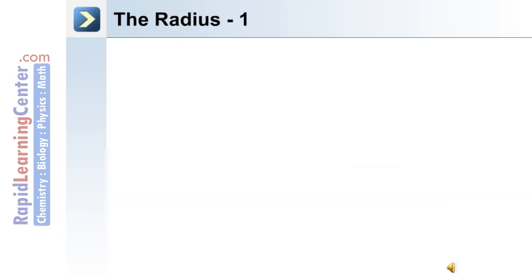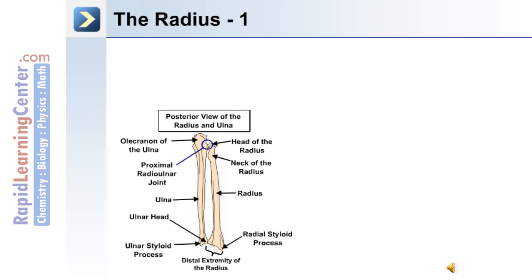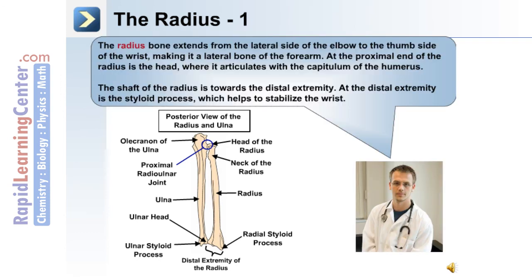The first bone of the forearm we'll discuss is the radius, and it, along with the ulna bone, are depicted in this posterior view. At the proximal end of the radius is the head, near where it articulates with the ulna bone. There's also the neck of the radius. At the distal end is the distal extremity of the radius, along with the radial styloid process. The radius bone extends from the lateral side of the elbow to the thumb side of the wrist, making it the lateral bone of the forearm. At the proximal end is the head, where it articulates with the capitulum of the humerus. At the distal extremity is the styloid process, which helps to stabilize the wrist.